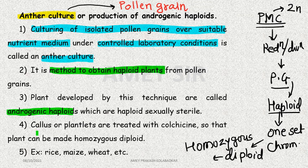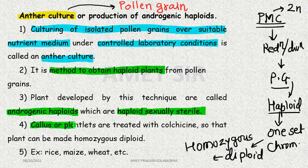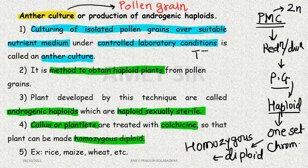'Andros' means male, 'genic' means produced — haploid means containing single set of chromosomes in its cells. They are haploid and sexually sterile — they will not produce gametes. They produce callus and plantlets, which are finally treated with colchicine, and then that plant becomes homozygous diploid. For example, suppose a plant's genotype is TtRrAa.